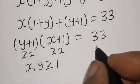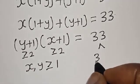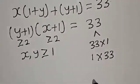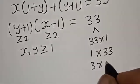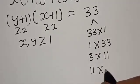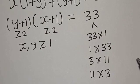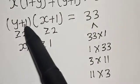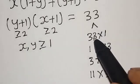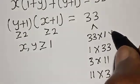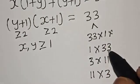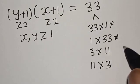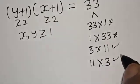So (y plus 1) multiplied by (x plus 1) is equal to 33. Now 33 can be written as 1 times 33, or 3 times 11. Since y plus 1 and x plus 1 are both greater than or equal to 2, the factor pair 1 times 33 is invalid because 1 is less than 2. Similarly 33 times 1 is invalid. We accept the factor pair 3 times 11 and 11 times 3, since both 3 and 11 are greater than or equal to 2.